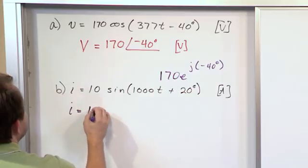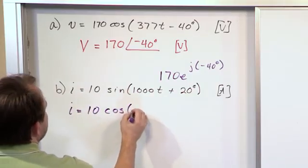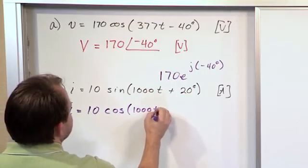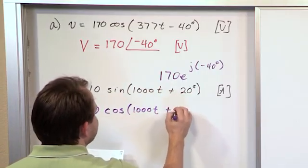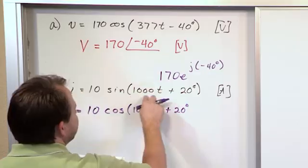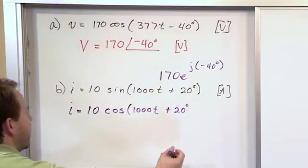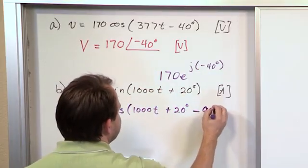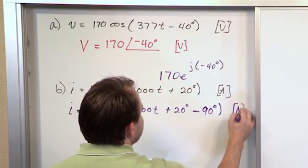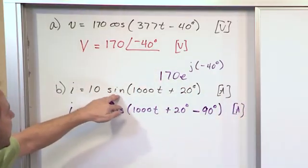The way you would write this as a cosine is 10 times the cosine of 1000t, and then you would have plus the 20 right here. This is so far just the sine, but to make it a cosine, you have to subtract 90 degrees from it. That's probably worth you remembering. Any time you have a sine...